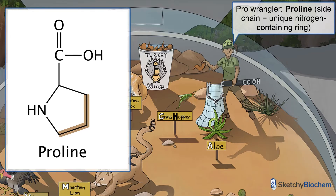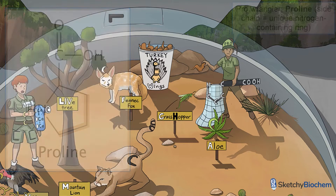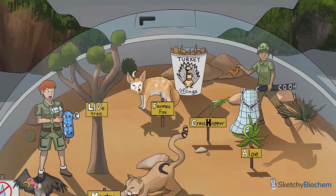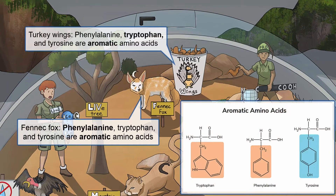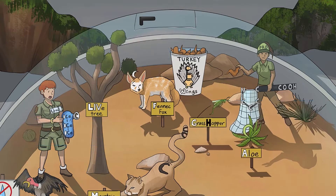Many proline residues are found in collagen because it's important for alpha-helix formation. Phenylalanine and tryptophan, depicted by the fennec fox and turkey wings respectively, are two out of the three aromatic amino acids. Phenylalanine is actually a precursor to tyrosine, which we'll talk about soon. Tryptophan is needed to synthesize niacin, serotonin, and melatonin.